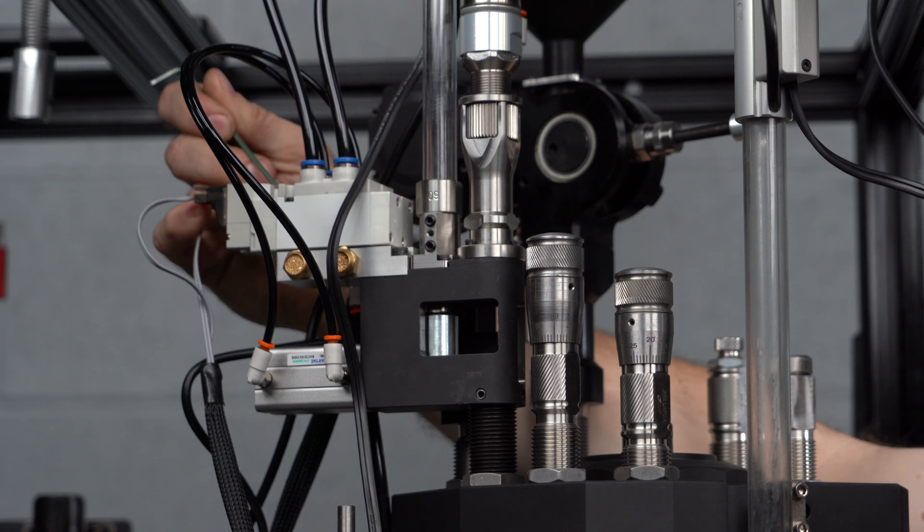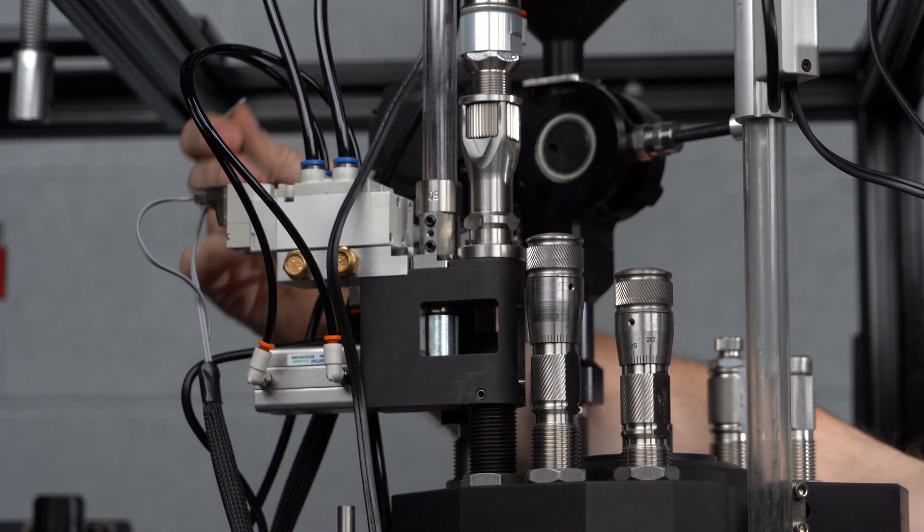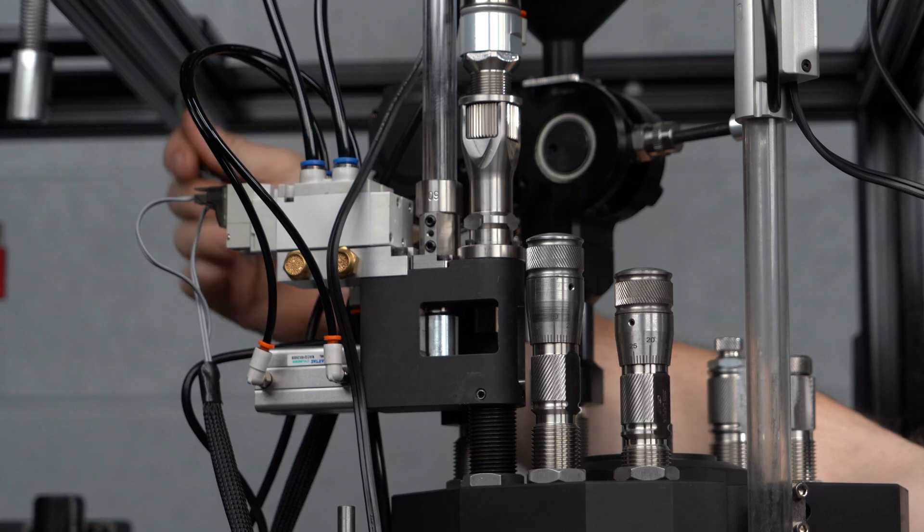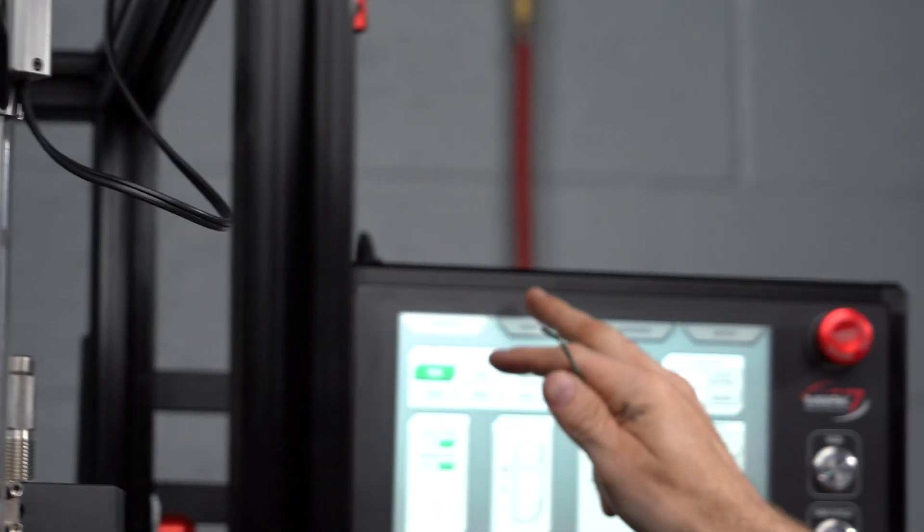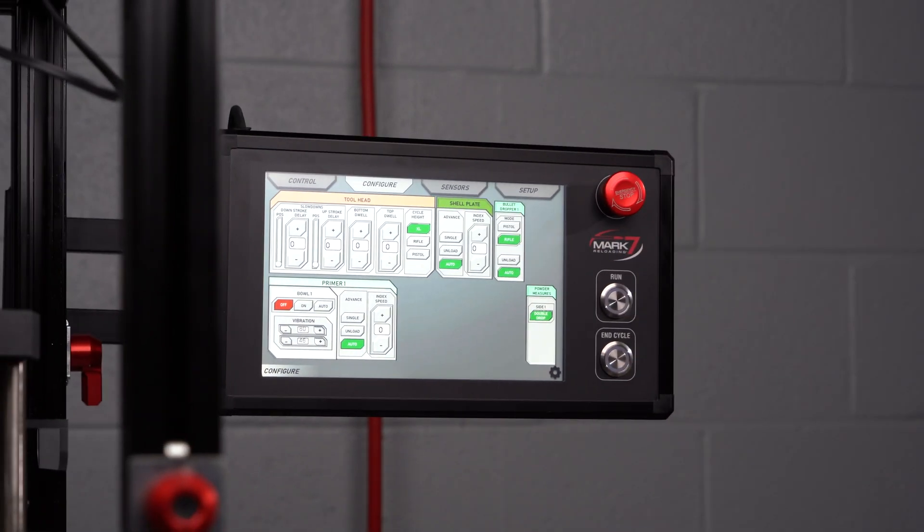You can use these manual actuations to test function and unload the dropper, or you can use the unload function in the HMI under the configure tab on the right hand side.